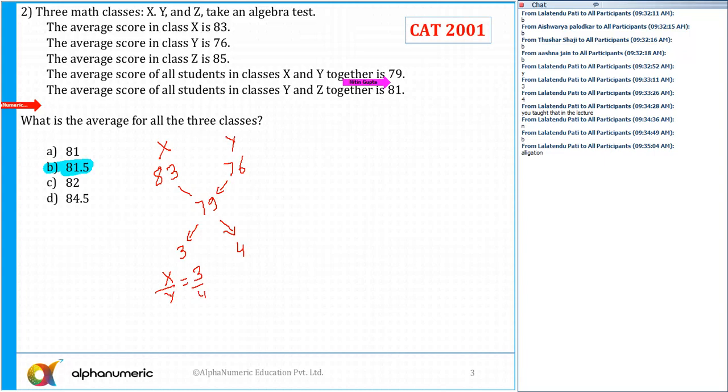So the ratio of number of students in class X to class Y is 3 by 4. Now the average score in class Y is 76, in class Z it is 85, and combining together the average of Y and Z is equal to 81.